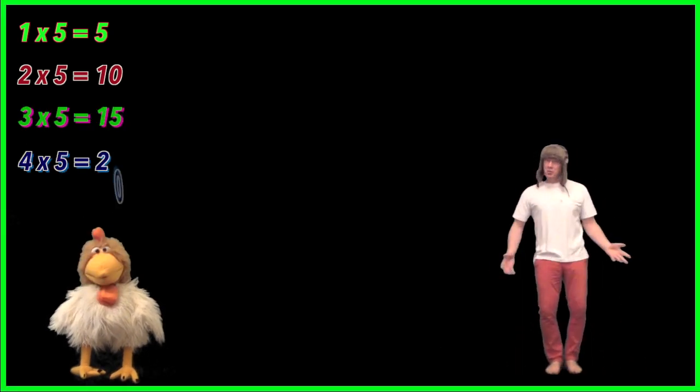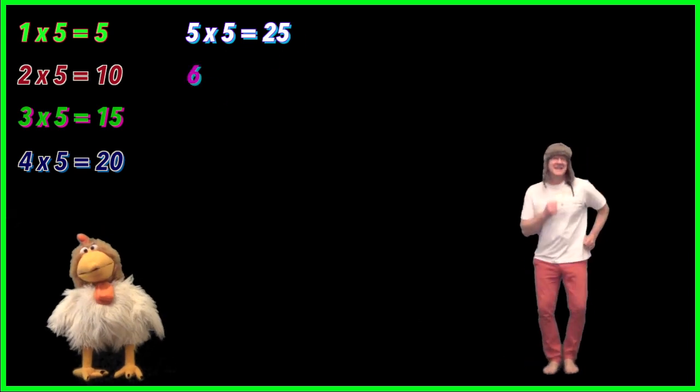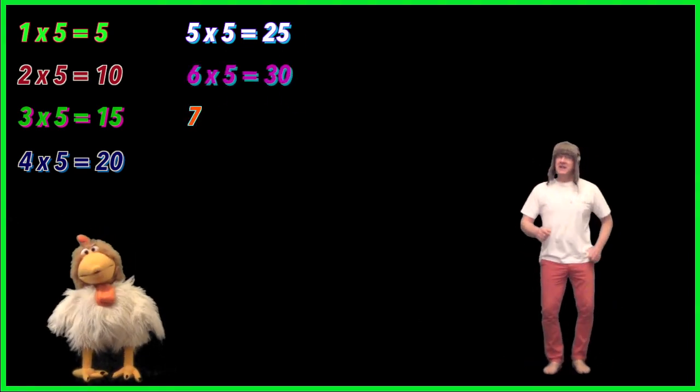5 times 5 is 25, 6 times 5 is 30, 7 times 5 is 35, 8 times 5 is 40.